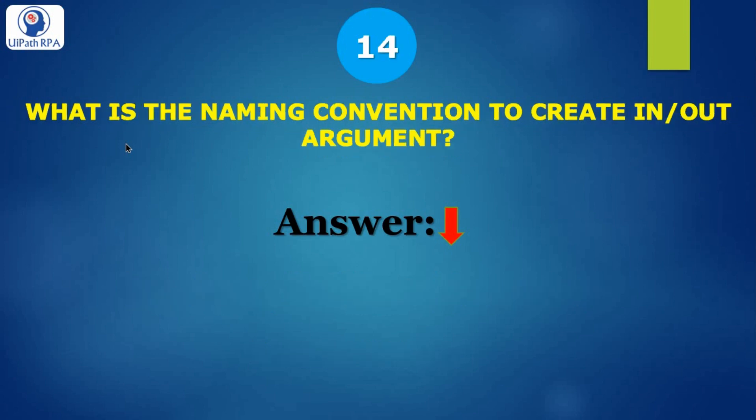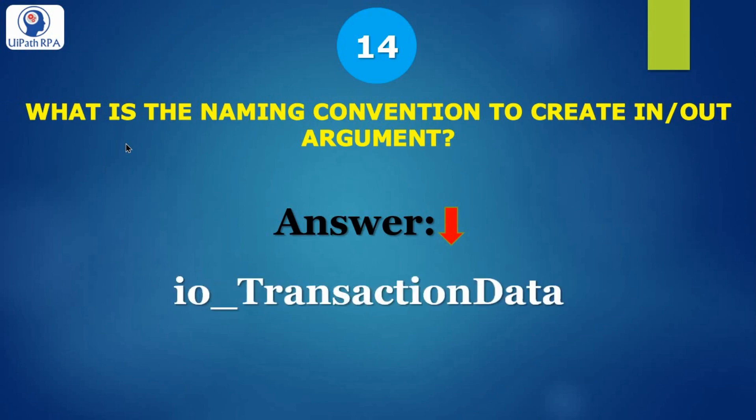What is the naming convention to create an In/Out argument? Naming convention means what is the best practice we need to follow to create any arguments or variables. To create an In/Out direction argument, we follow: io_ and then the purpose of that argument.